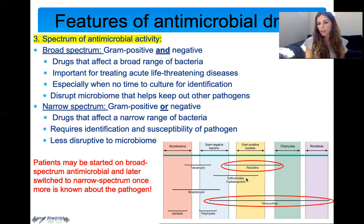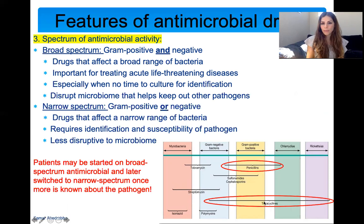Looking at different antibiotic classes: tetracycline affects gram-negative bacteria, gram-positive bacteria, chlamydia, and more, so it's considered a very broad-spectrum antibiotic. Penicillin mostly affects gram-positive infections, so if someone has a gram-negative infection it won't work — it's a narrow-spectrum antibiotic.